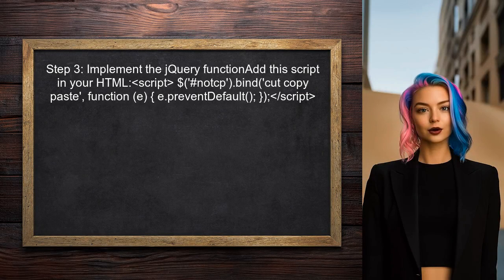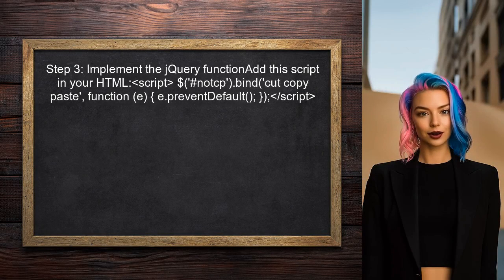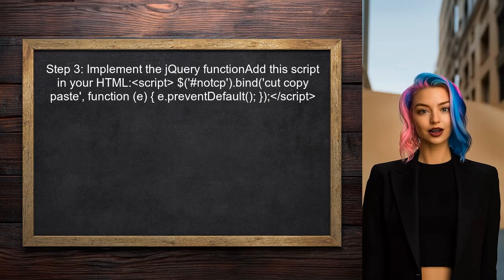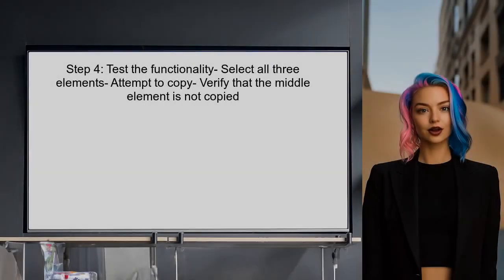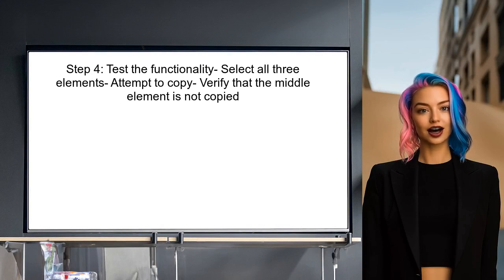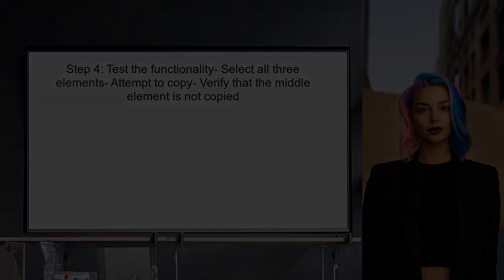Now implement the jQuery function to prevent the copy action on the specified element. This can be done by binding the cut, copy, and paste events to that element. Finally, test the functionality — select all three elements and try to copy them. The middle element should not be copied while the other two should be.